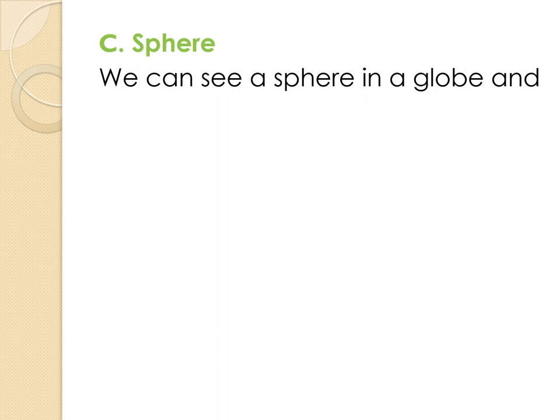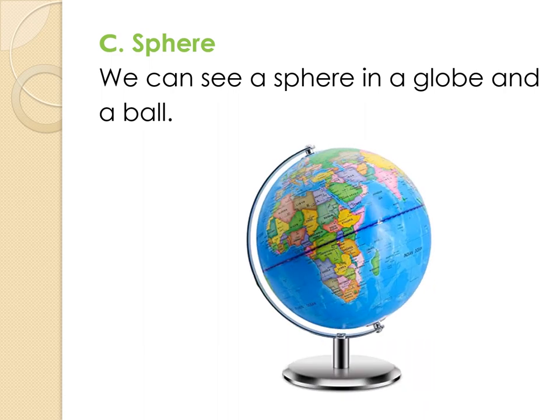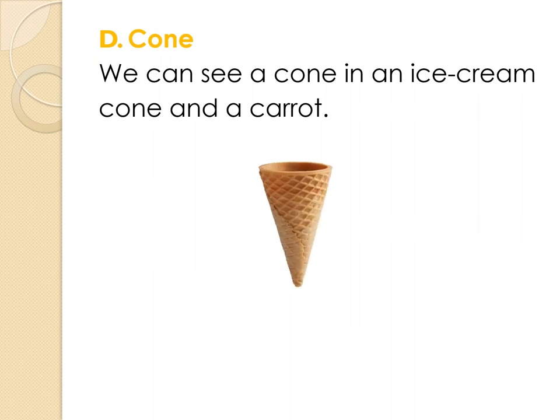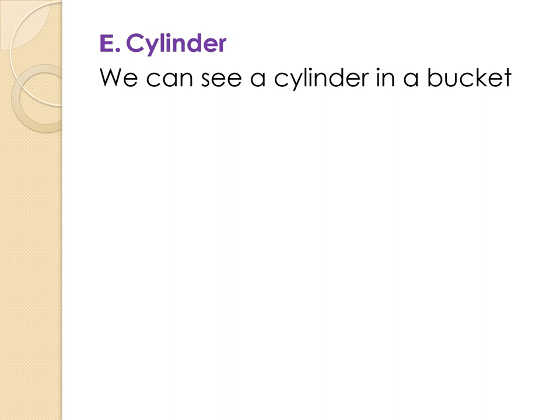Sphere. We can see a sphere in a globe and a ball. Cone. We can see a cone in an ice cream cone and a carrot. Cylinder. We can see a cylinder in a bucket or a barrel.